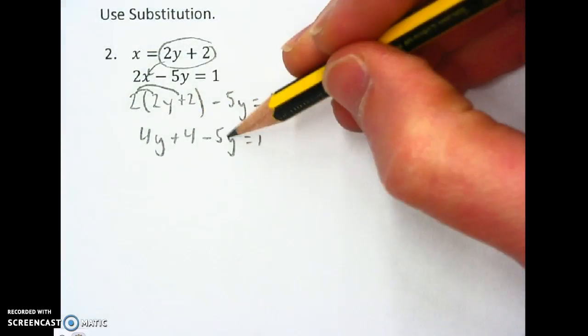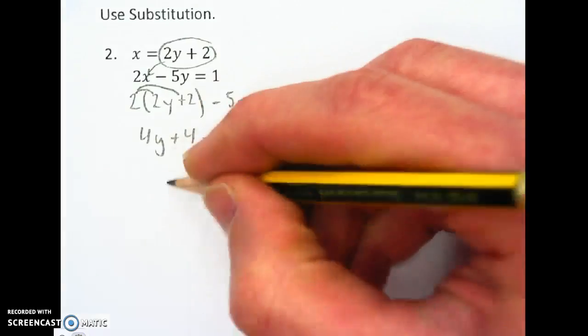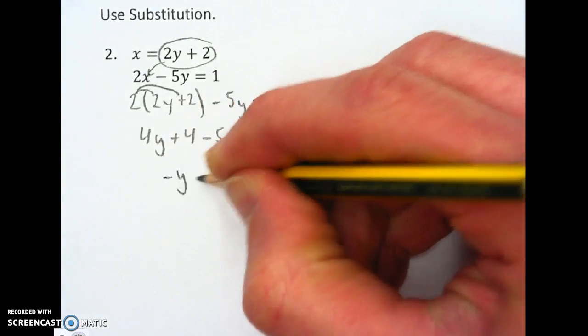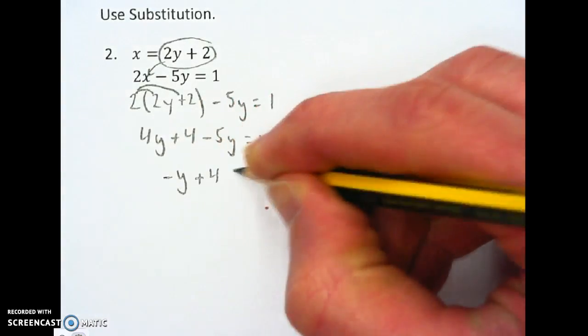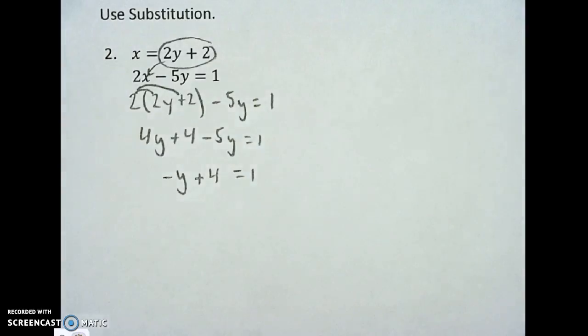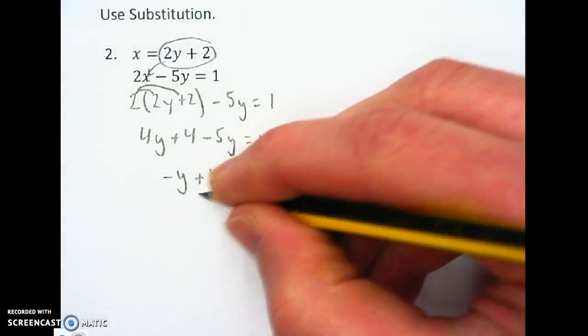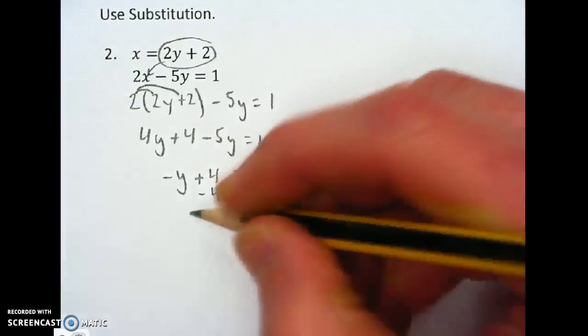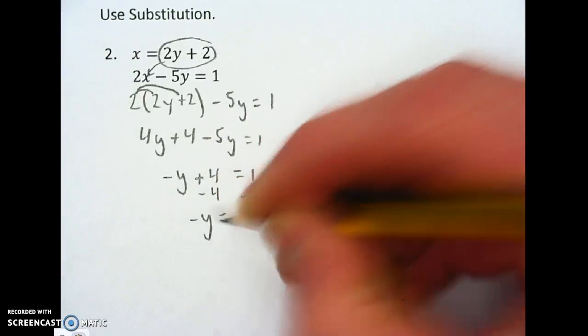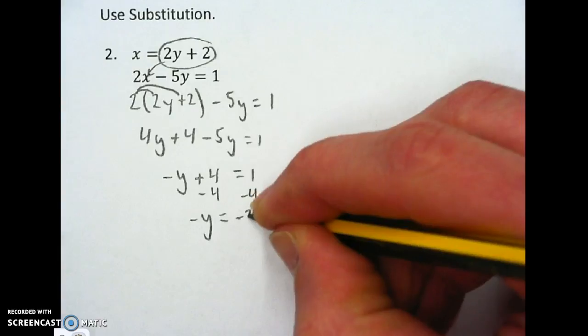Get my y's together. 4 minus 5, so I'll have a negative y plus 4 equals 1. Subtract the 4 from both sides. I'll have negative y equals negative 3.